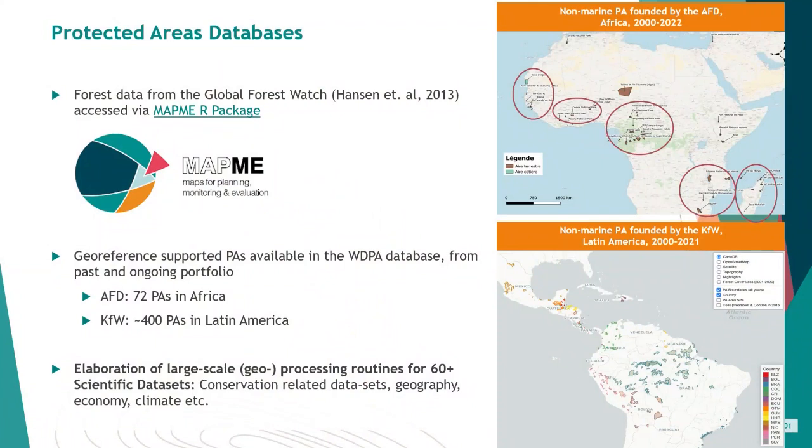To answer this question, we need data on the location of protected areas extracted from the WDPA database, an indicator of forest cover loss from Global Forest Watch, and other geolocated covariables related to conservation. The data on forest cover and covariables were extracted and pre-managed using the MAPME biodiversity package in R. You can see on the right the KFW and AFD locations of the protected areas studied — with a concentration in the Amazonian basin for KFW and in the Congo basin for AFD.